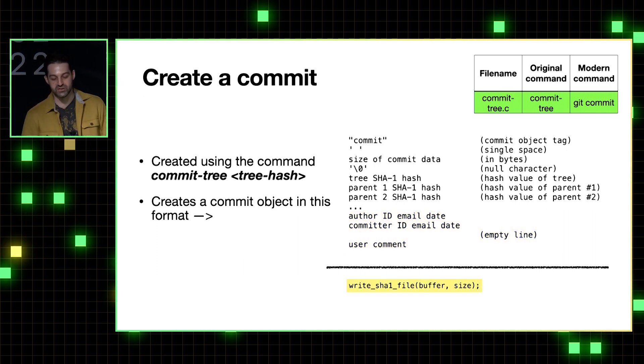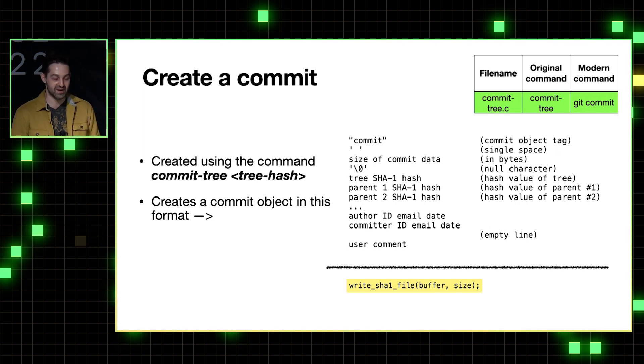So once this commit is populated in memory, our right SHA1 file function takes care of compressing it, hashing it, and storing it in the object database. So that sort of completes our trio of objects sitting as kind of loose objects in the object database.